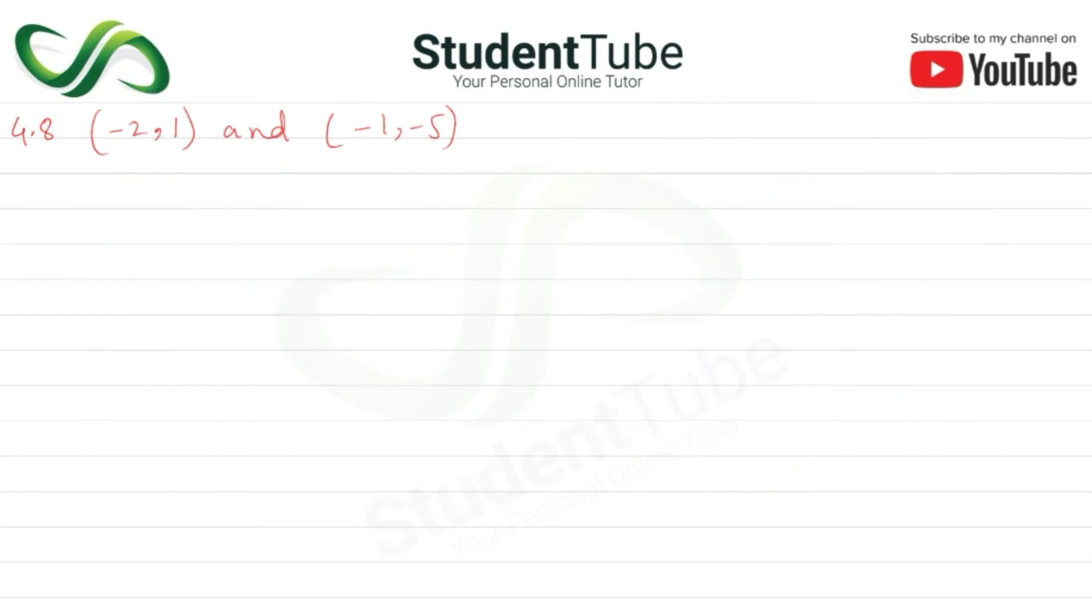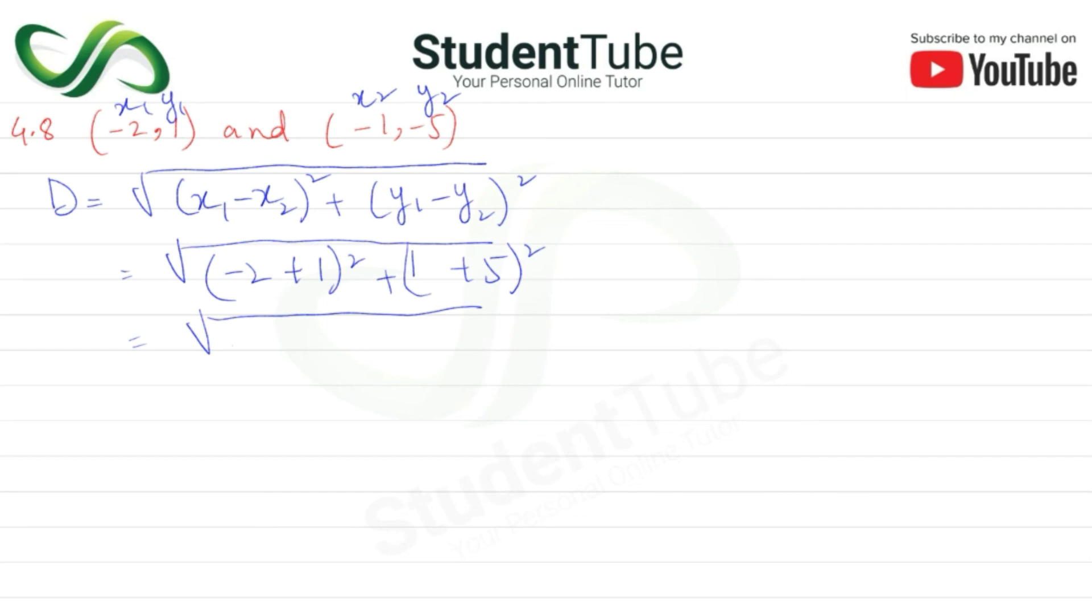Now problem 4.8: points are (-2, 1) and (-1, 5). D = √[(x₁-x₂)² + (y₁-y₂)²]. So x₁ is -2, minus x₂ which is -1 becomes -2 - (-1) = -2 + 1 = -1 in the square. Plus y₁ is 1 minus y₂ is 5, so 1 - 5 = -4, wait, minus minus plus gives 1 + 5 = 6 in the square. So (-1)² is 1 plus (6)² is 36. Adding them: 1 + 36 = 37. Square root, so the answer is √37.